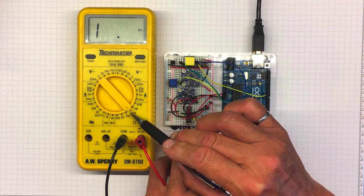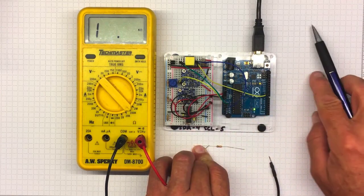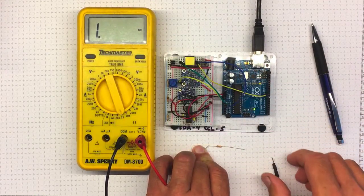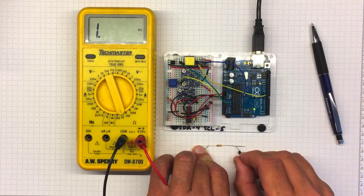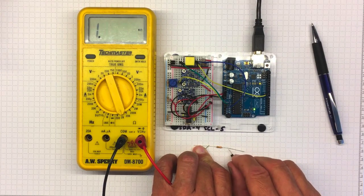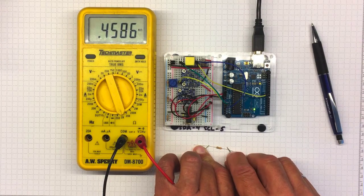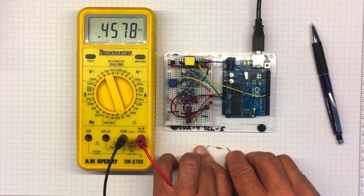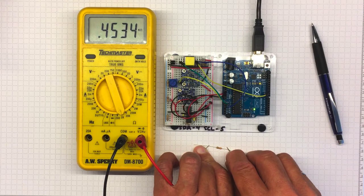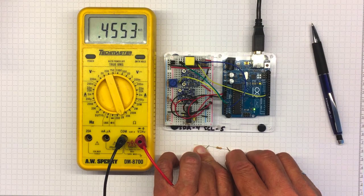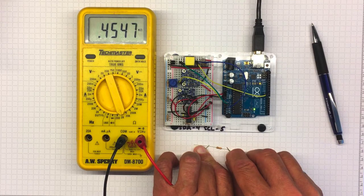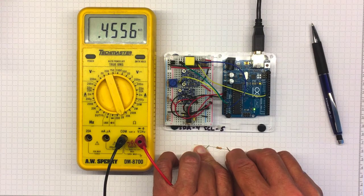Now if I'm only measuring less than 1K resistance, then I might want to go down to the 2K measurement range. And I'll measure again. And this time I get a much more detailed result. I get about 453, 455 K ohms or 455 ohms.